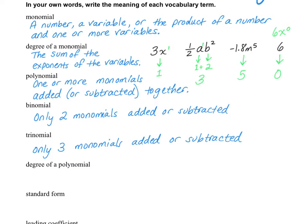For example, we could have two x plus three — that would be a binomial. A trinomial — if you think of a tricycle has three wheels — so that's three monomials that are added or subtracted together. For example, x squared plus three x plus four would be a trinomial, because it has three terms that are added or subtracted.